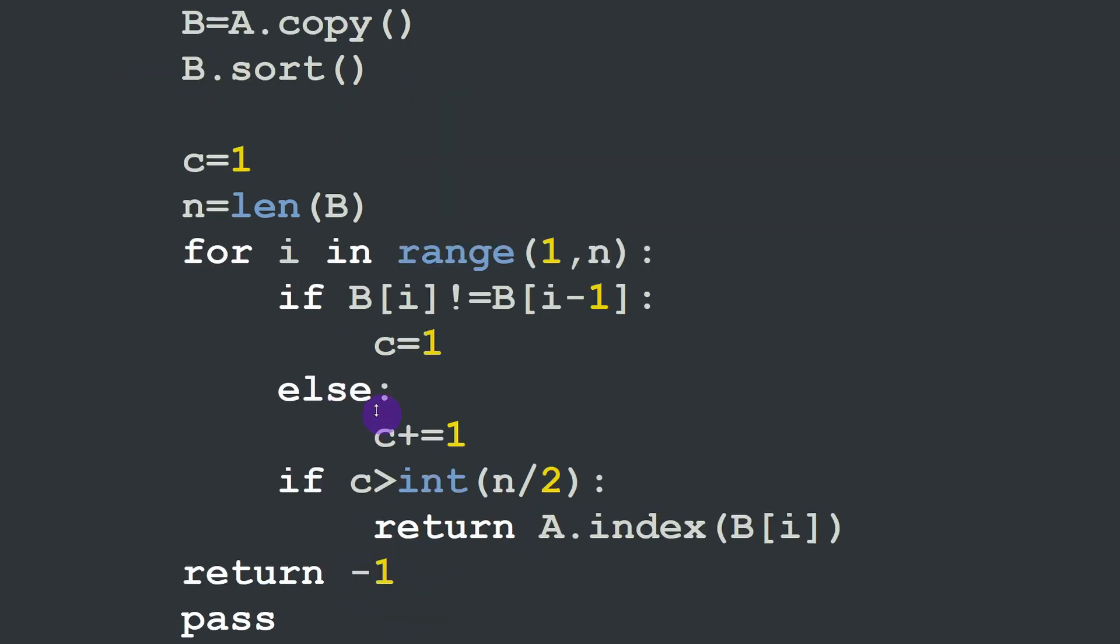If they are different then we put C equal to one, we reinitialize C to one. Else we are going to increment C by one because then we have two occurrences or one additional occurrence of the same element B[i] and B[i-1]. While scanning the elements we are going to test if C, the number of occurrences of each element, is greater than half of n, meaning half the size of the vector B.